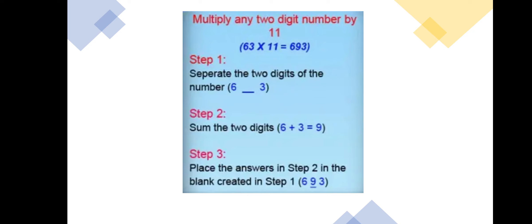In step 3, place the answer in step 2 in the blank created in step 1. If you place 9 in between 6 and 3, we get the answer 693. So, 63 multiplied by 11 is equal to 693. We get this answer by this trick in an easy manner.